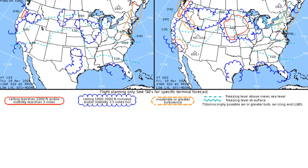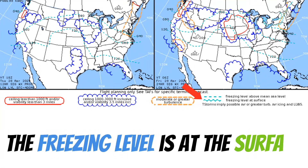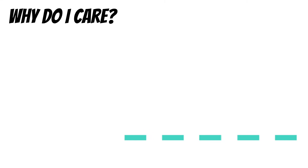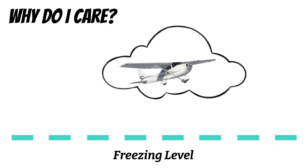If you ever see a cyan zigzag line, the freezing level is at the surface in those areas. This isn't quite as important for VFR pilots, but for IFR pilots it's extremely important. If you're above the freezing level and you fly through any moisture — like a cloud — you'll have a really high chance of picking up icing. VFR pilots shouldn't be flying through clouds, so this isn't quite as big a deal to them.